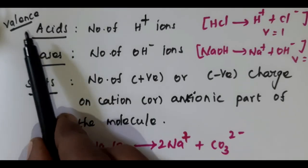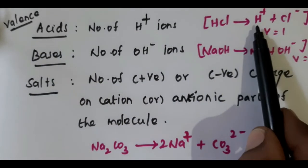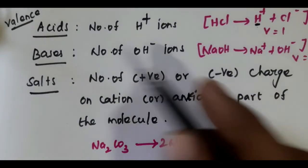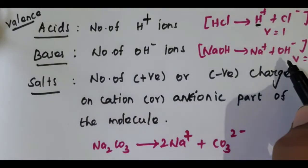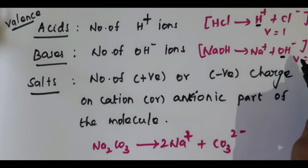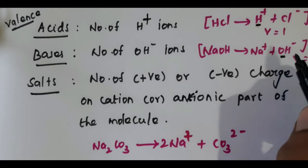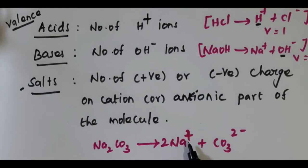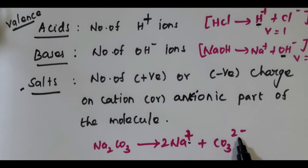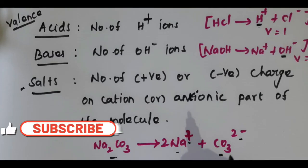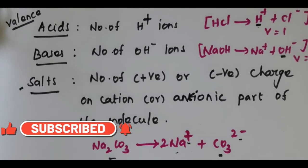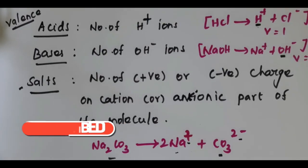To summarize: to calculate the valence of acids, count the number of hydrogen ions in the dissociation reaction. For bases, count the number of OH⁻ ions in the reaction. For salts, count the number of positive or negative charges on the cation or anionic part of the molecule. Thank you for watching. Please do subscribe and share.